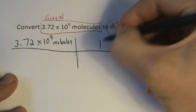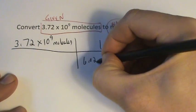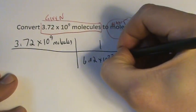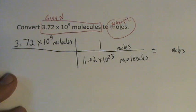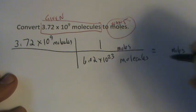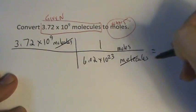Well, one mole is Avogadro's number, 6.02 times 10 to the 23rd molecules. Now we can cancel molecules out.